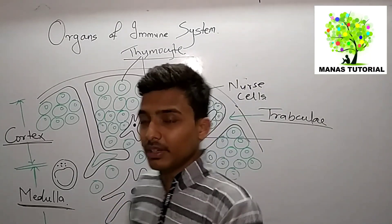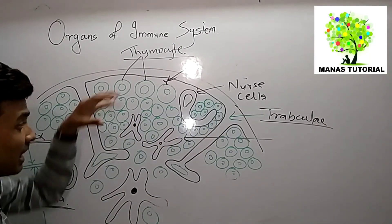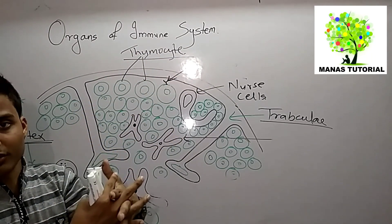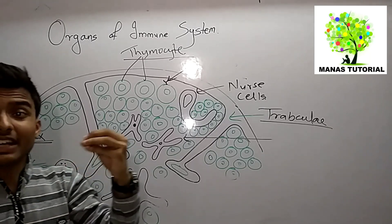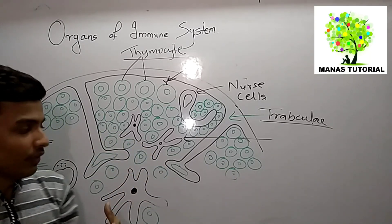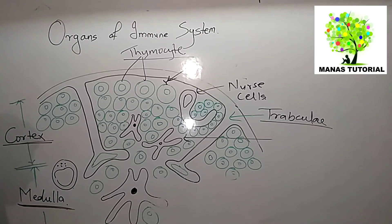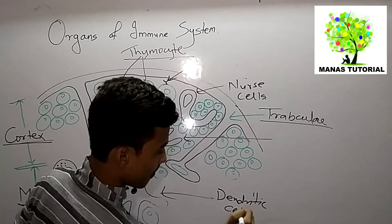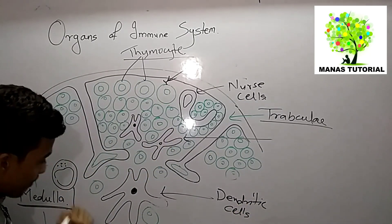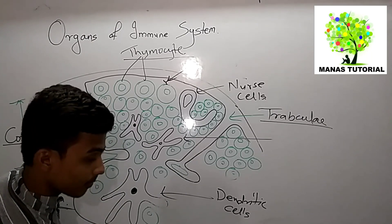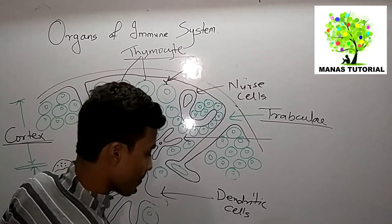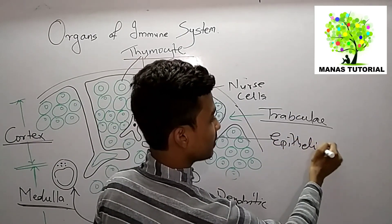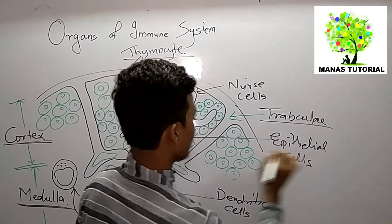In the medullary region there is a smaller number of thymocytes. The cortex and medullary regions are criss-crossed by a three-dimensional stromal cell network which consists of dendritic cells, macrophages, and some epithelial cells.